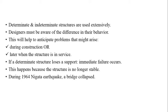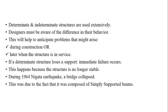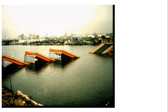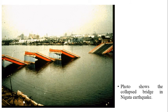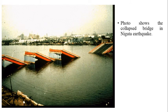During the 1964 Niigata earthquake, a bridge collapsed. This was due to the fact that it was composed of simply supported beams, which were determinate in nature. This is the photo showing the failure of the collapsed bridge.